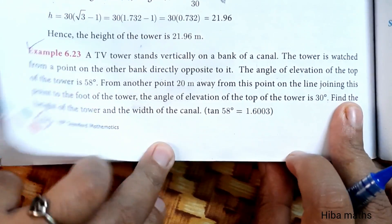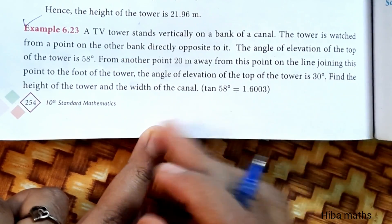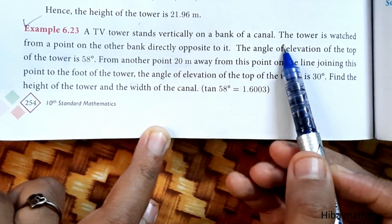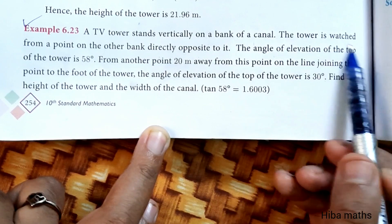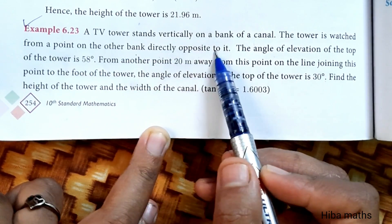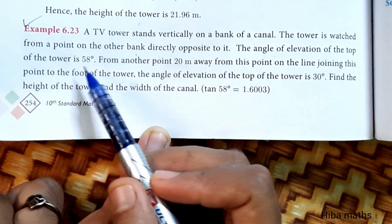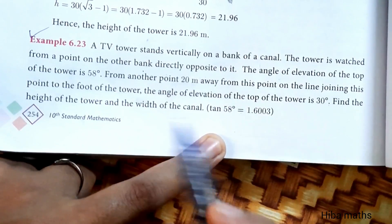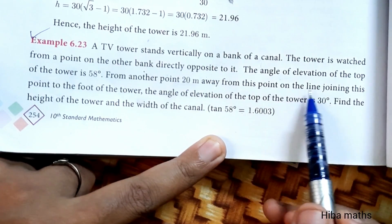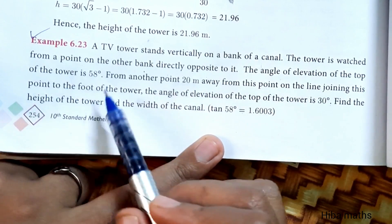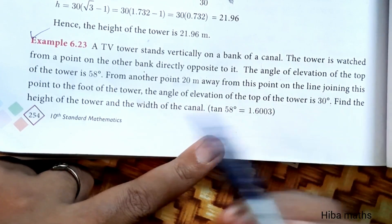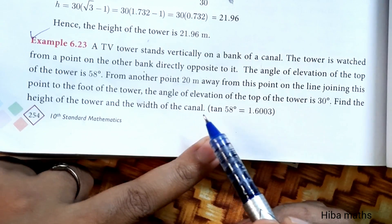Hello students, welcome to Hiva Max 10 Standard, Chapter 6, Example 6.23. A TV tower stands vertically on a bank of a canal. The tower is watched from a point on the other bank directly opposite to it. The angle of elevation of the top of the tower is 58 degrees. From another point 20 meters away, the angle of elevation of the top of the tower is 30 degrees. Find the height of the tower and the width of the canal.